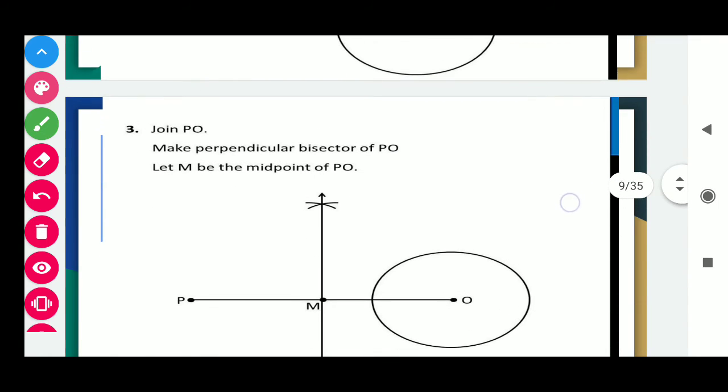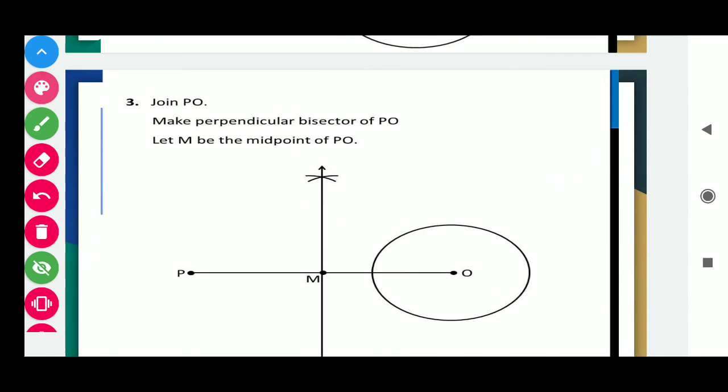After that join PO. Now we have to join this PO point. Make perpendicular bisector of PO. What is perpendicular bisector? Perpendicular bisector means if we draw a line which makes 90 degree angle and bisects the line, that means sets the line into equal parts. So we have to make a perpendicular bisector on OP. This perpendicular bisector divides OP in two equal parts. But how to make the perpendicular bisector? First open your arc more than half.